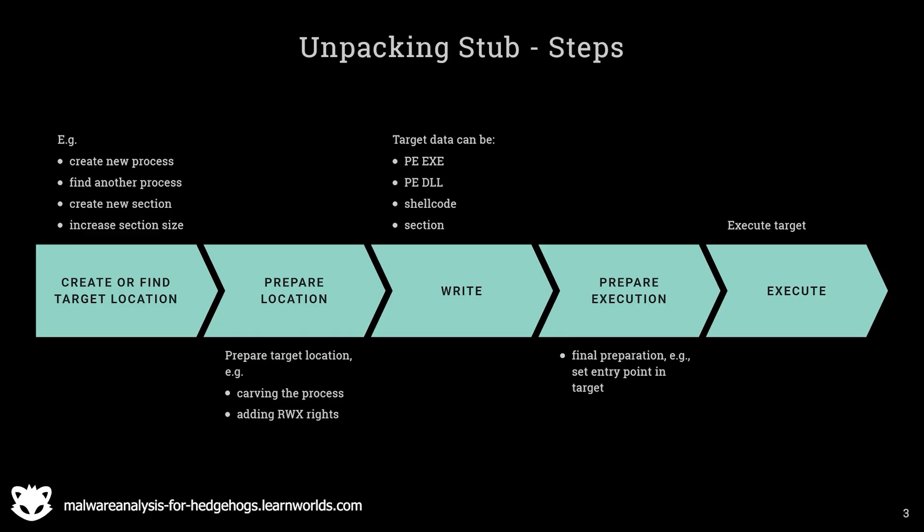We identified five steps. First, create or find a target location, which is usually done by opening a process or creating a new section. Second, prepare the target location — for instance by adding read, write, execute permissions. Third, write to the target location, and depending on what type of target data it is, there are different Windows APIs that might be used. Fourth, sometimes we need to do preparation before execution, such as setting or changing the entry point in the target process. And finally, the target has to be executed.